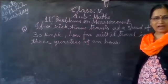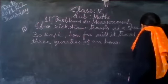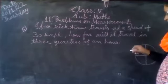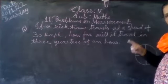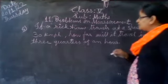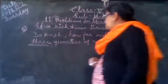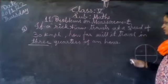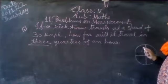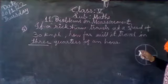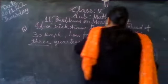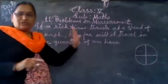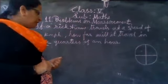This question is similar to the previous one. Quarter means one fourth of an hour, which is 15 minutes. 1 hour means 4 quarters — 1, 2, 3, 4 — that is 60 minutes. 3 quarters means 45 minutes. The rickshaw covers 30 km in 60 minutes, and we need to find the distance for 45 minutes, or simply 3 quarters.